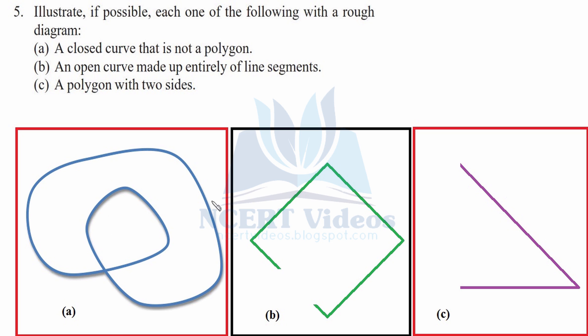These are the possible diagrams. The first part, a closed curve. It is a closed curve and it must not be a polygon. Yes it is a closed curve. It must not be a polygon. Yes it is not a polygon because a polygon is formed with a straight line and these are not straight lines. A part is possible. Therefore we will tick it.